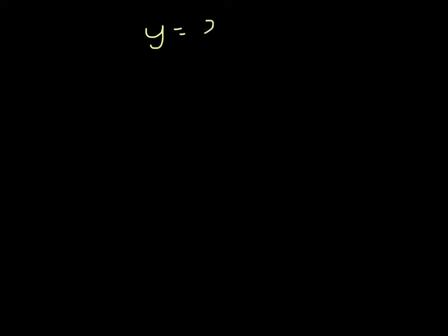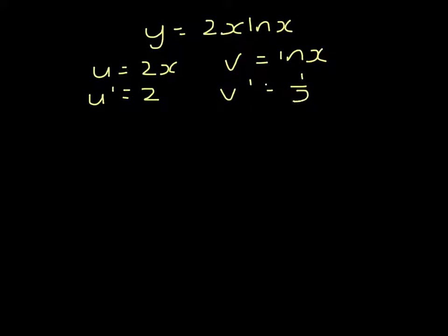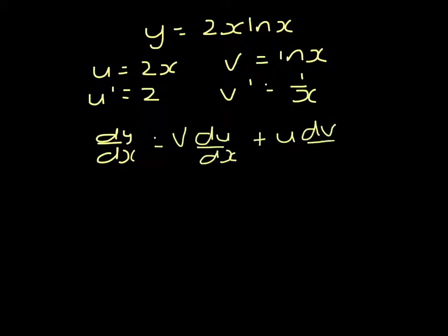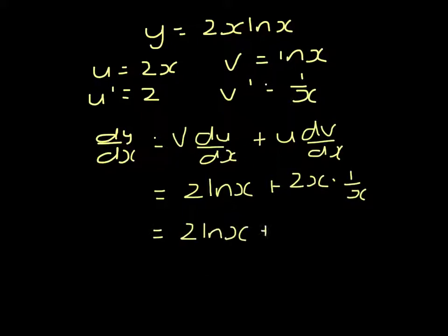Part 2 is a product. 2X ln(x). I'm going to let U equal 2X, differential being 2. And I'm going to let V be ln(x), differential being 1 over X. dy/dx is V du/dx plus U dv/dx. So that's 2 ln(x) plus 2X times 1 over X. So that's 2 ln(x) plus 2.